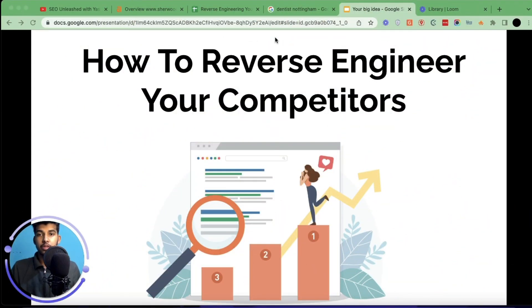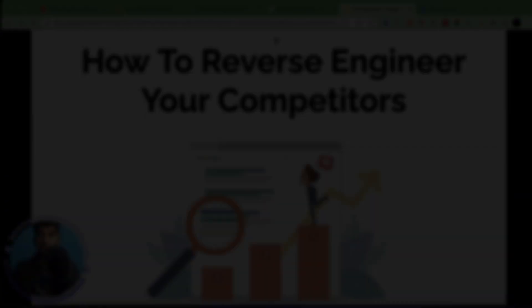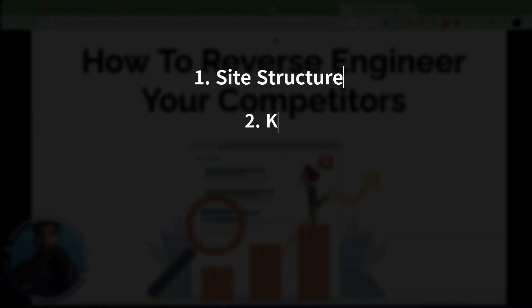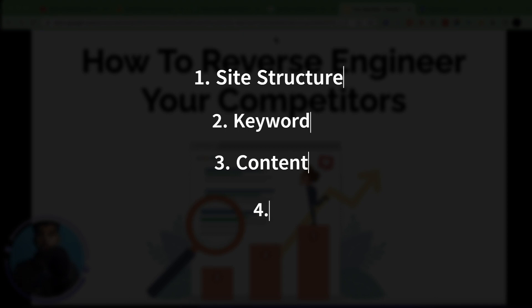In a nutshell, we will be looking into four main things: first, site structure; second, keywords; third, content and on-page; fourth, link profile.